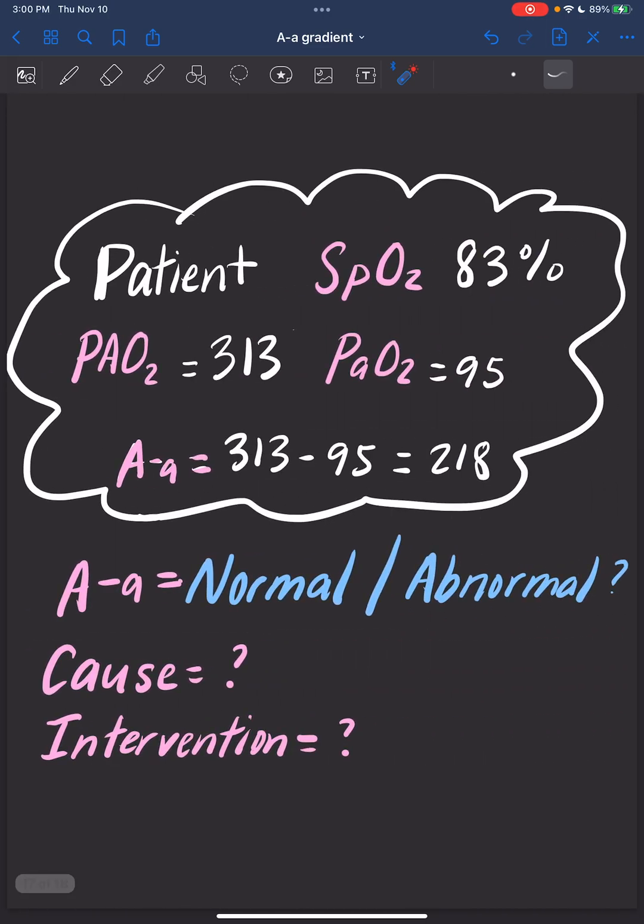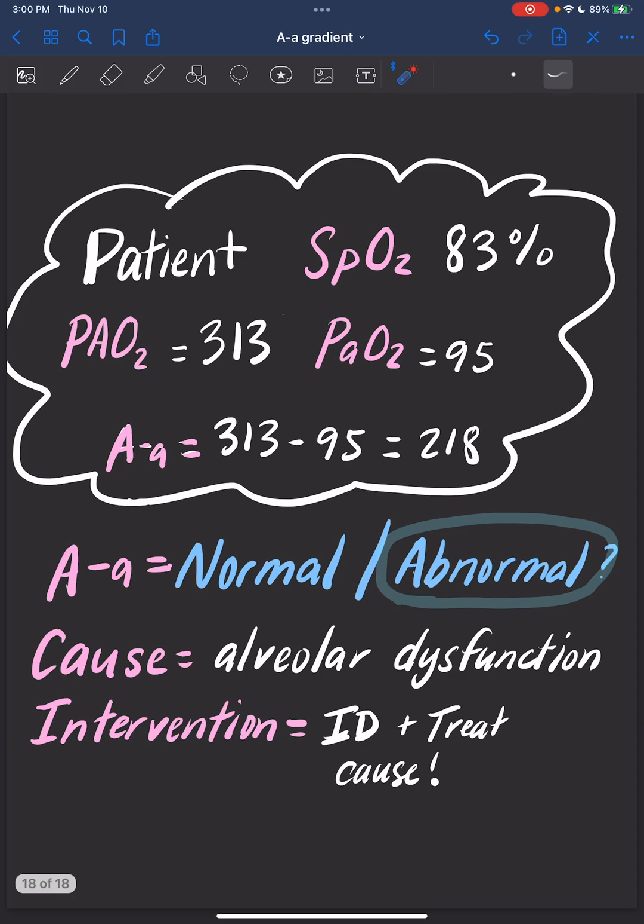Finally, our last patient. Oh no, he's desaturating to 83%. Our alveolar oxygen says 313. Our arterial says 95. The A-a gradient is 218. Is this normal? What likely caused this, and what can we do about it? You're right, this is abnormal. Our A-a gradient is 218, which is way greater than 15. So alveolar dysfunction is the main cause. But there are different causes of alveolar dysfunction. We need to ID and treat the cause. So if it's pulmonary edema, maybe we need a diuretic. And if it's atelectasis, maybe we need to increase our PEEP.